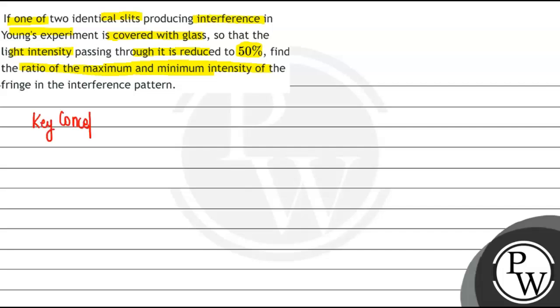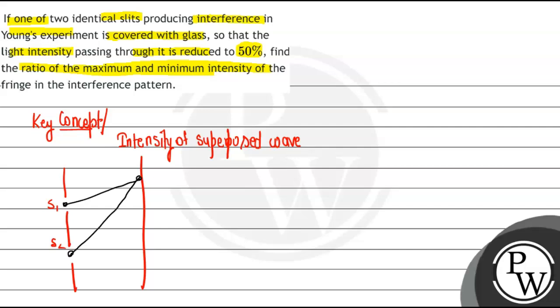So the key concept you'll use here is the intensity of superposed waves. Suppose one slit has intensity I1 = I0. Since one is reduced to 50%, which means half, the other slit I2 will have value I0/2.